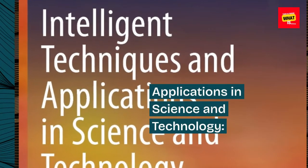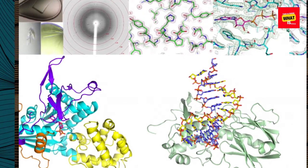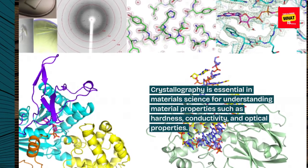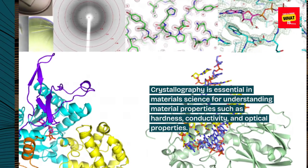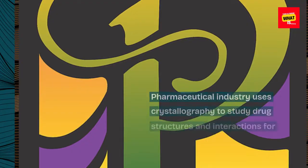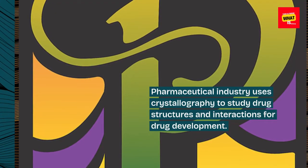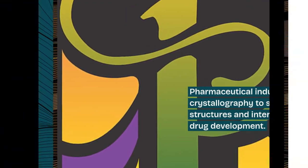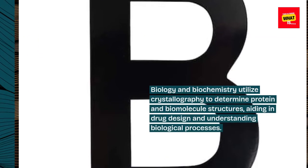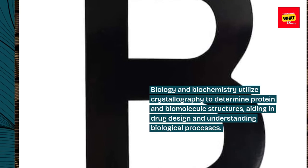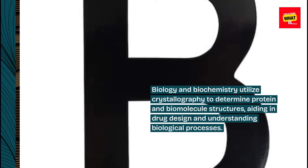Applications in Science and Technology. Crystallography is essential in materials science for understanding material properties such as hardness, conductivity, and optical properties. The pharmaceutical industry uses crystallography to study drug structures and interactions for drug development. Biology and biochemistry utilize crystallography to determine protein and biomolecule structures, aiding in drug design and understanding biological processes.